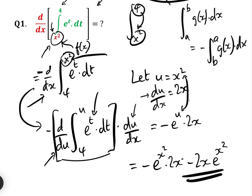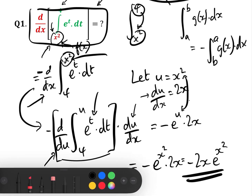So the final answer is minus 2x·e^(x²), and that is the answer to Question 1.